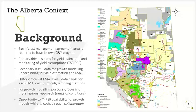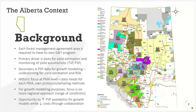That historic focus at the FMA level means each company has been focused on collecting data for their own FMA's needs — their own protocols, sampling methods, and specific designs — basically each FMA has their own self-sufficient domain. But for growth model development, models are developed at a provincial level, so data collection needs to be at a regional level to capture the range of conditions being modeled. An opportunity was identified to increase PSP data available for growth modelers while reducing costs through a collaborative effort.